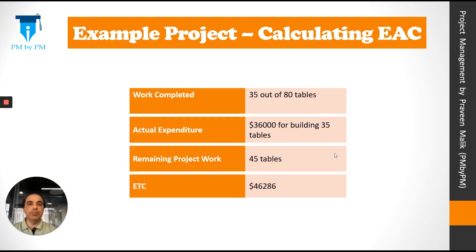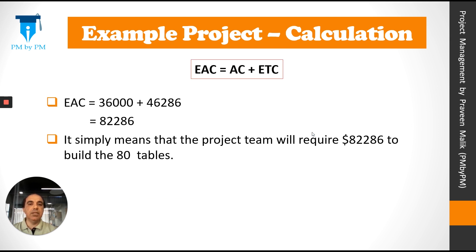Let's look at our example project. On the control date, we have completed 35 out of 80 tables and we have spent $36,000 for building these 35 tables. 45 tables are still remaining. In the previous video, we had calculated ETC as $46,286. Putting the values in our formula, EAC = AC + ETC gives us $82,286. This means the project team will require $82,286 to build all 80 tables.